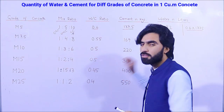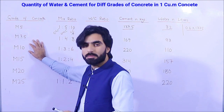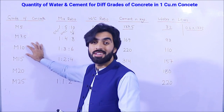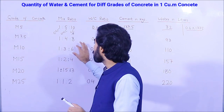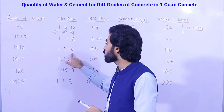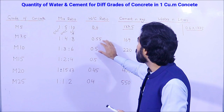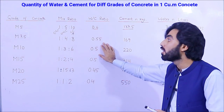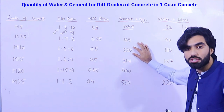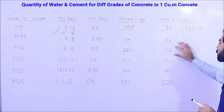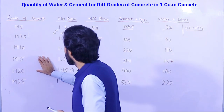For M10 grade concrete, the characteristic strength is 10 Newton per mm² after 28 days. The mix ratio is 1:3:6 — one part cement, three parts sand, and six parts aggregate. The water-cement ratio is 0.5, requiring 220 kg of cement and 110 liters of water per cubic meter.